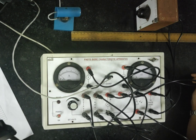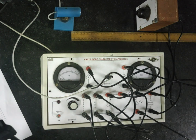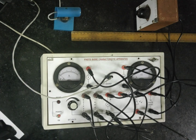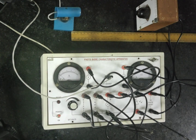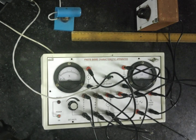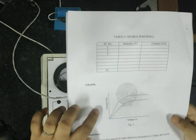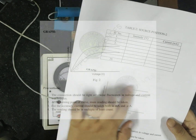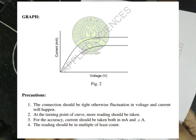After jotting down all the experimental readings, we plot the graph of current versus voltage and we should get this characteristic graph. Thank you.